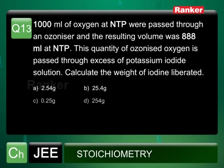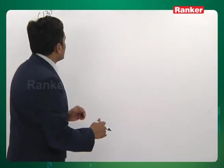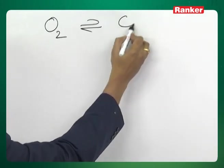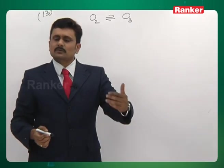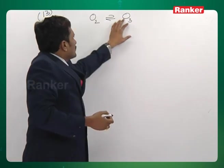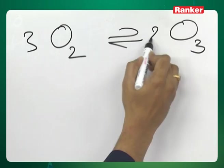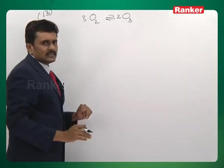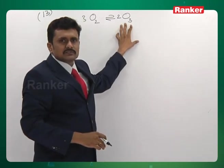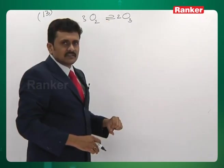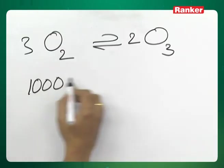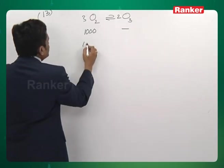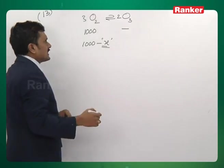Next problem: 1000 ml of oxygen at NTP are passed through an ozonizer and the resulting volume is 888 ml. This ozonized oxygen is then passed through excess potassium iodide — find the weight of iodine liberated. Two concepts are involved: eudometry (gas analysis) and iodometry. Not all oxygen converts to ozone since ozone is unstable at room temperature. Assuming x ml of oxygen has reacted in the ozonizer at STP.